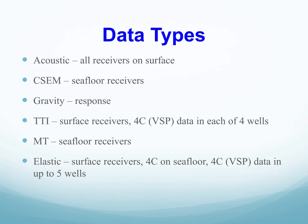The types of data generated include: for acoustic, receivers recorded near the surface; for controlled source EM, seafloor receivers and seafloor sources; for gravity, the natural gravity response calculated from the density model; for the TTI model, surface receivers plus four-component VSP data in each of four wells in the model; for the magnetotelluric simulation, the natural response using a set of about 1,300 seafloor receivers at 20 periods; and for the elastic simulation, surface simulations, VSP data, and four-component data on the seafloor.